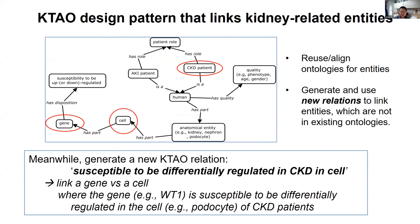To address this, we have a general design pattern. You have a gene, you have a cell — the gene is expressed in the cell, and the cell is part of the kidney. The kidney is part of a human, and the human can have AKI disease or CKD disease. The human has qualities like age, gender, and phenotype. The gene can be susceptible — we can't say for sure, but it's susceptible to being up or down. We call the key relation a 'shortcut relation': it links the gene, the cell, and the disposition together.